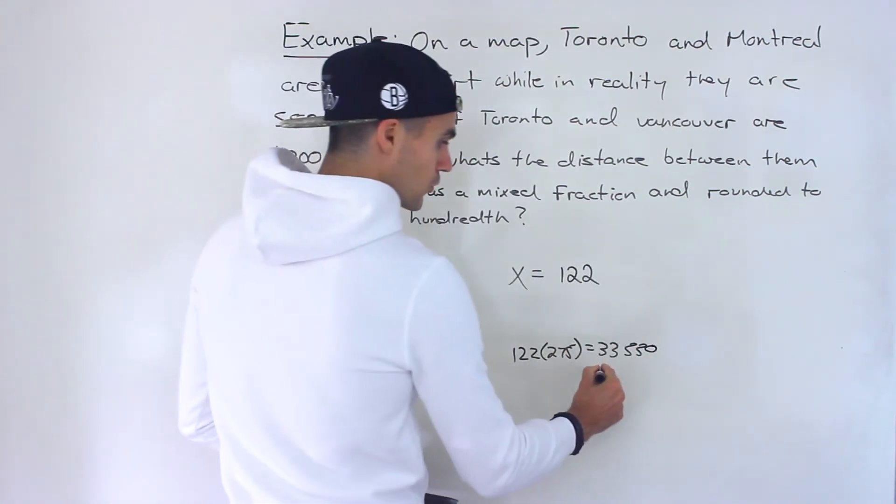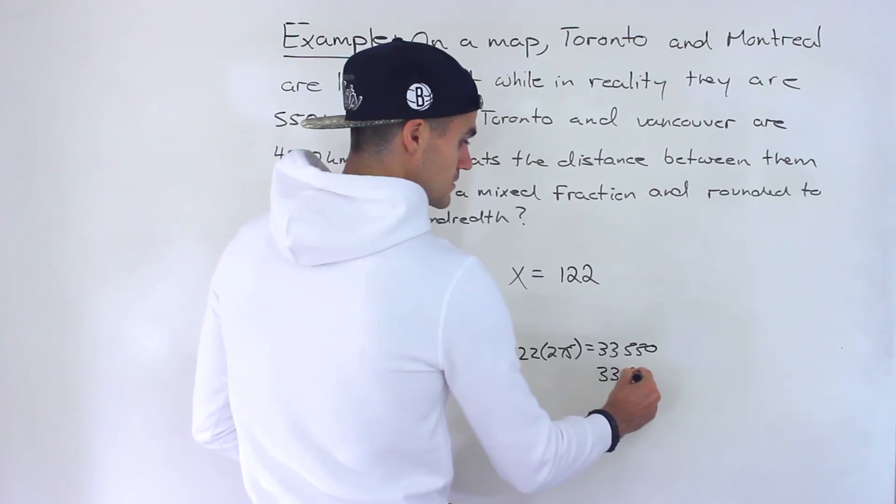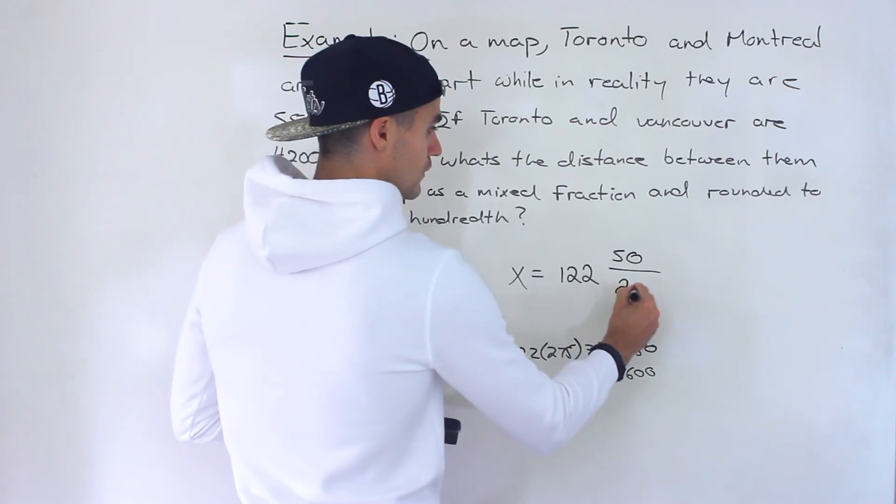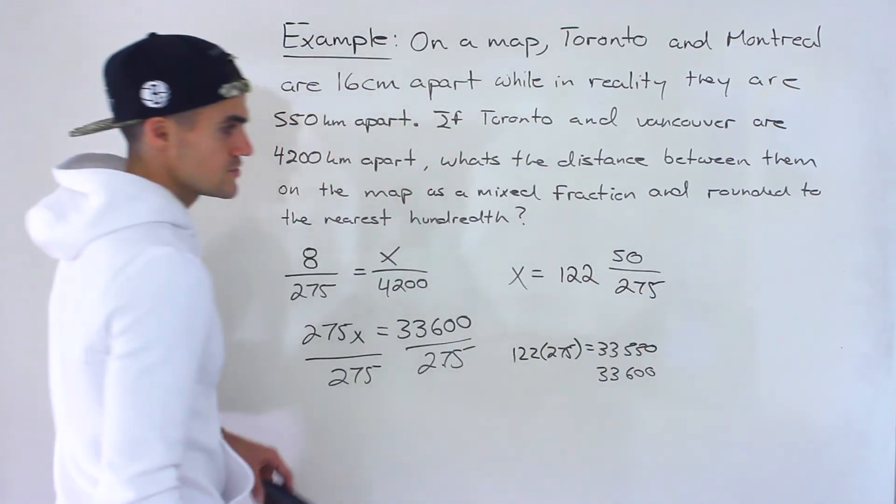And so how much more do we have to get to 33,600? Well we have 50 more of the 275.